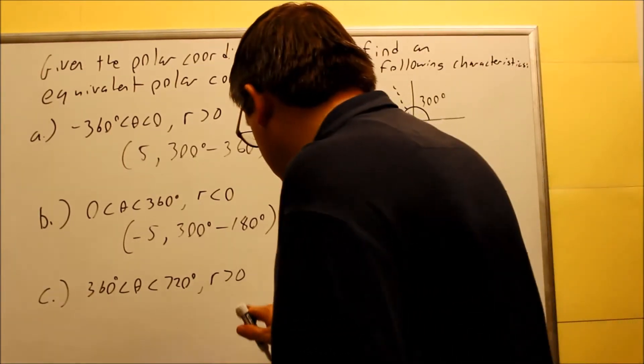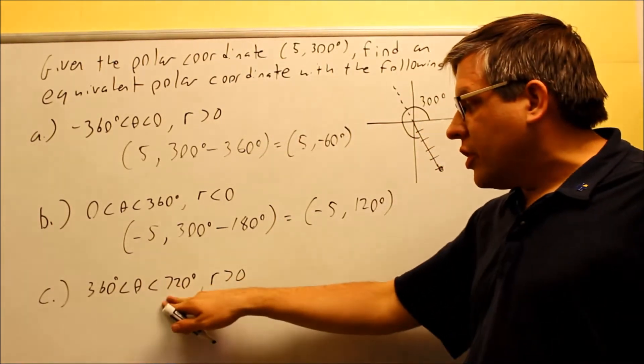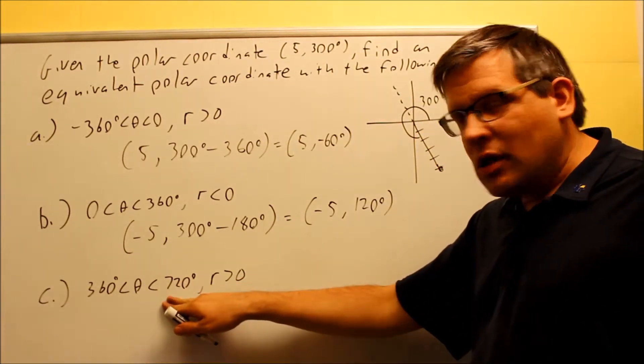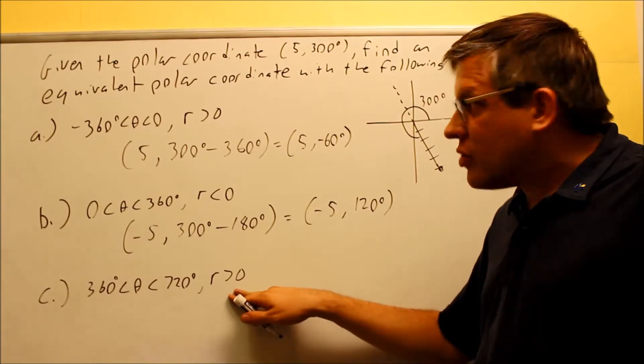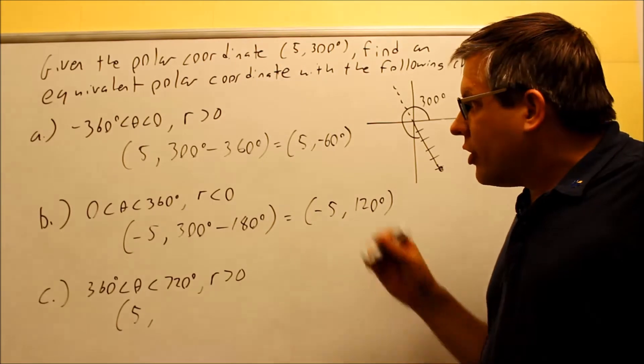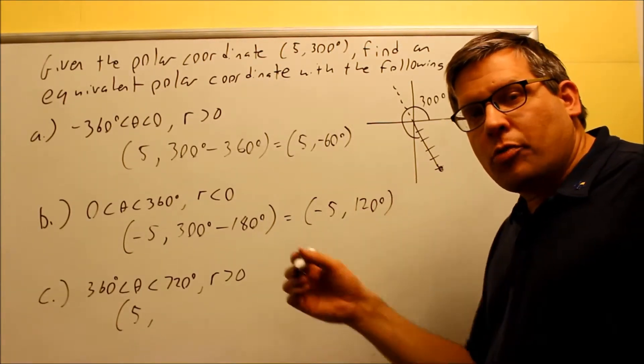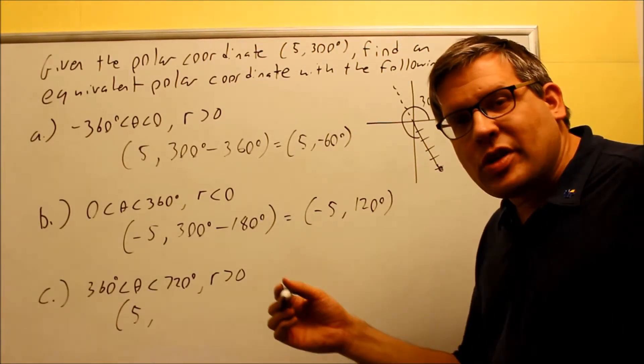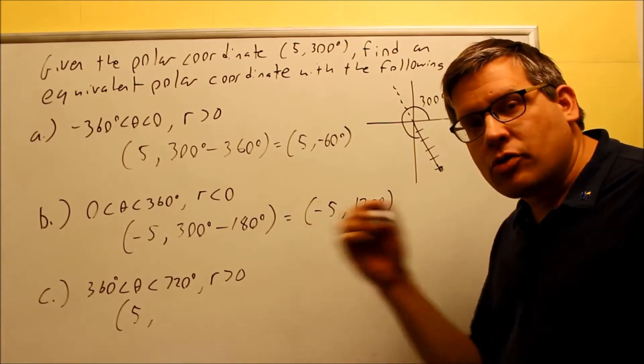Now, the last one, we want our theta to be between 360 and 720, and then the r has to be greater than 0. Now, my r originally was already positive. So if you're not changing the sign of the r, the formula you're going to use is one with 360. We're going to choose to either add or subtract 360.